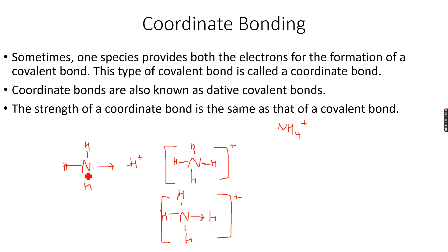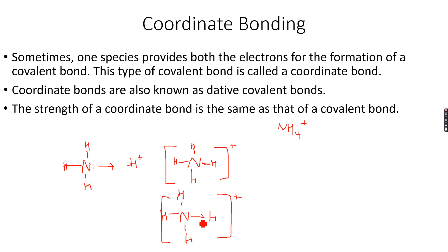Initially, ammonia had a trigonal pyramidal shape because it had 1 lone pair and 3 bonding pairs. But in the case of the ammonium ion, there are 4 bonding pairs of electrons — 1, 2, 3, and 4. There are no lone pairs on the nitrogen, which is the central atom. So that's why it has a tetrahedral shape.